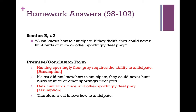The way we diagram this argument is as follows. I believe that the first assumption, premise one, is actually leading directly to premise two. Premise two is basically just a particular instance of premise one. Premise one is a general claim — it's saying all hunting of sportingly fleet prey requires the ability to anticipate. Well, the logical consequence of that is that cats would then have to require this ability. And if cats didn't have this ability, they couldn't do it. That just logically follows from one.